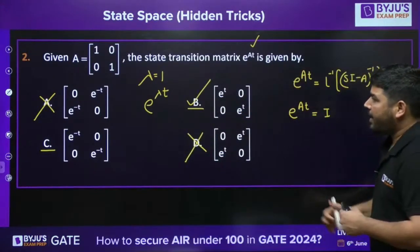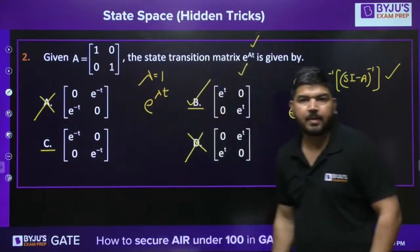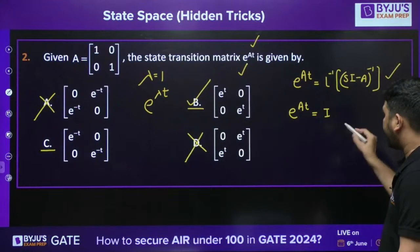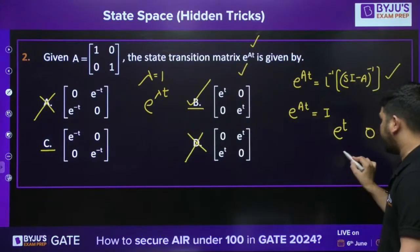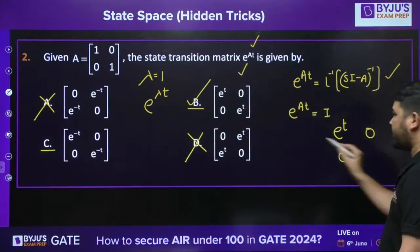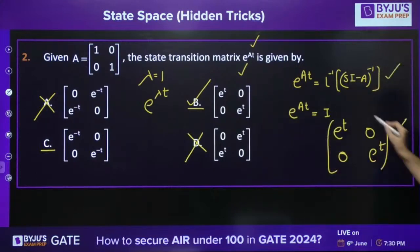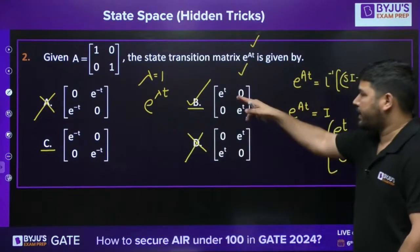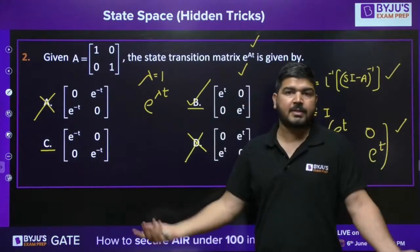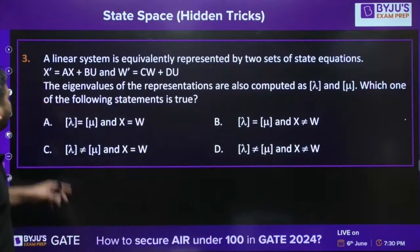Another way to verify: take the derivative of e^(At) and put t=0 — you must recover the A matrix. Differentiating the candidate matrix, then substituting t=0, gives back the same A matrix. This confirms the answer is option B. These two basic rules — identity at t=0, and recovering A via differentiation — are all you need.